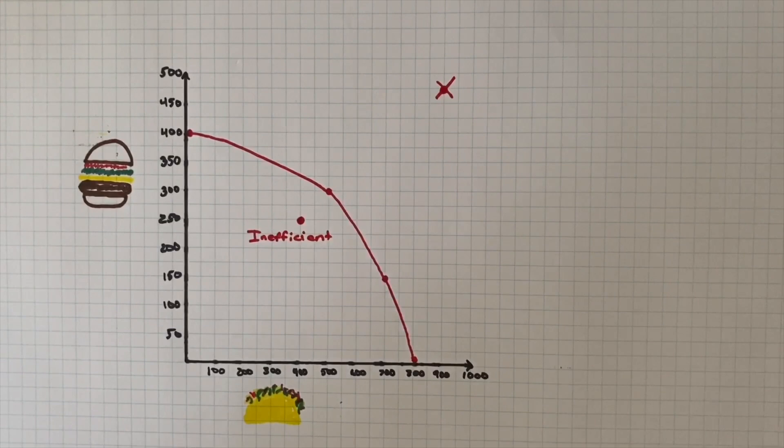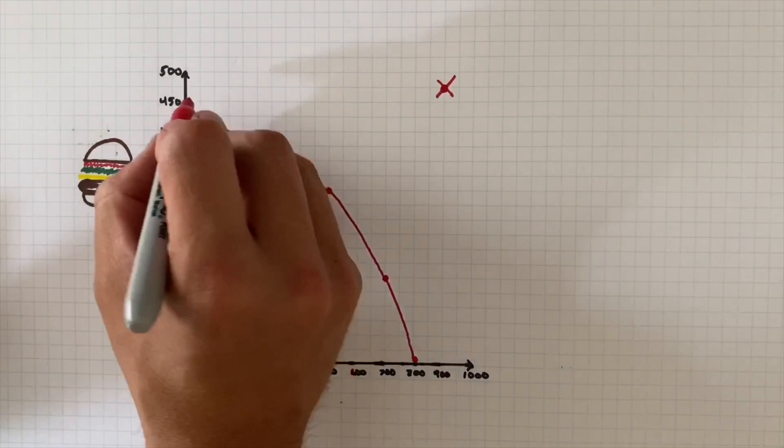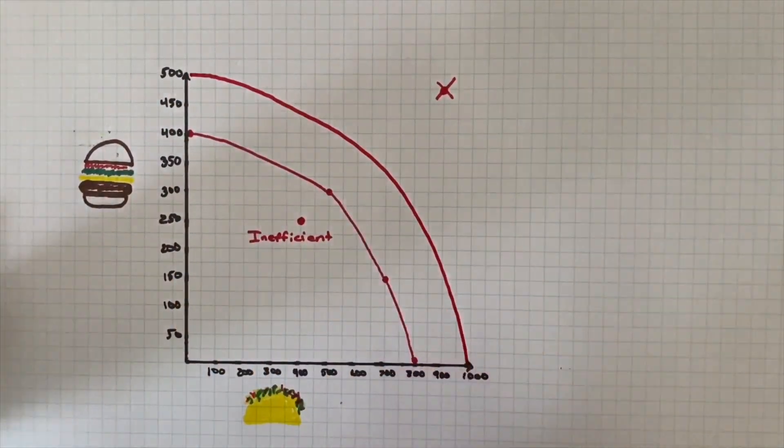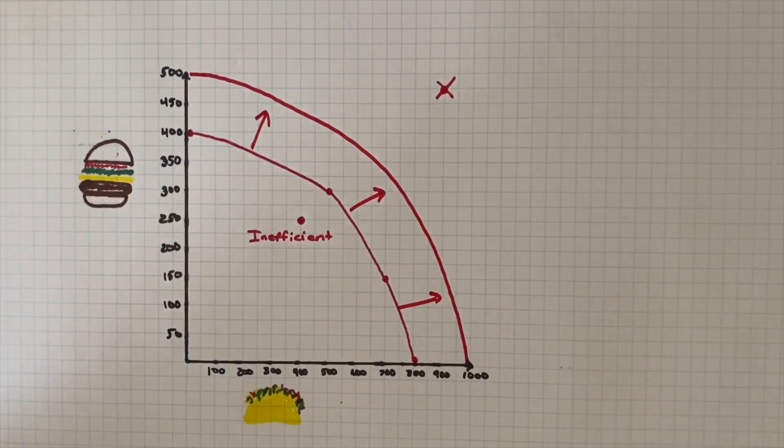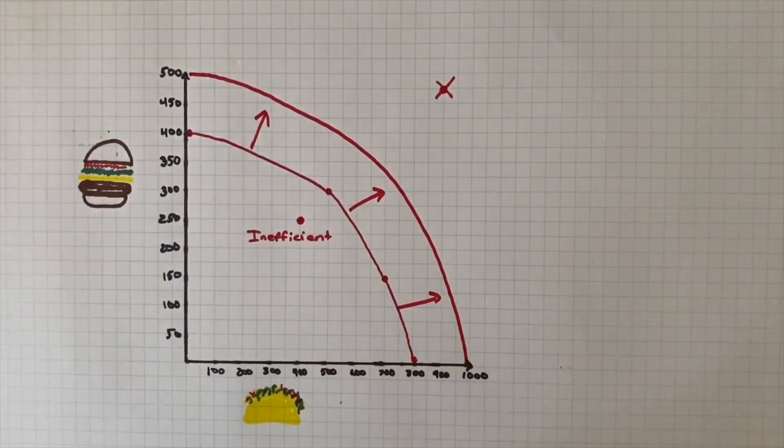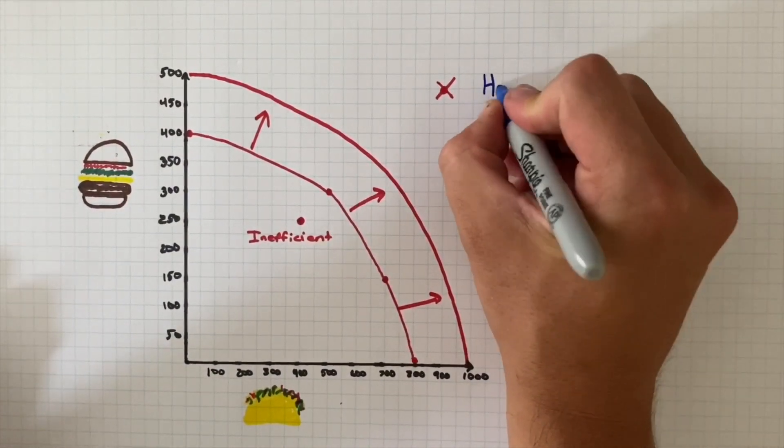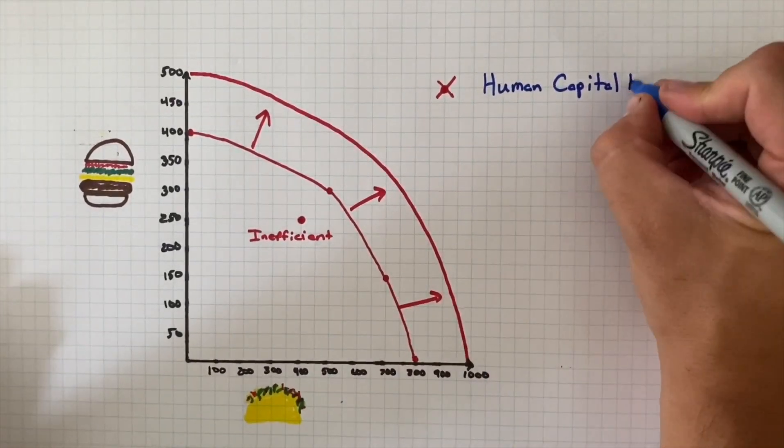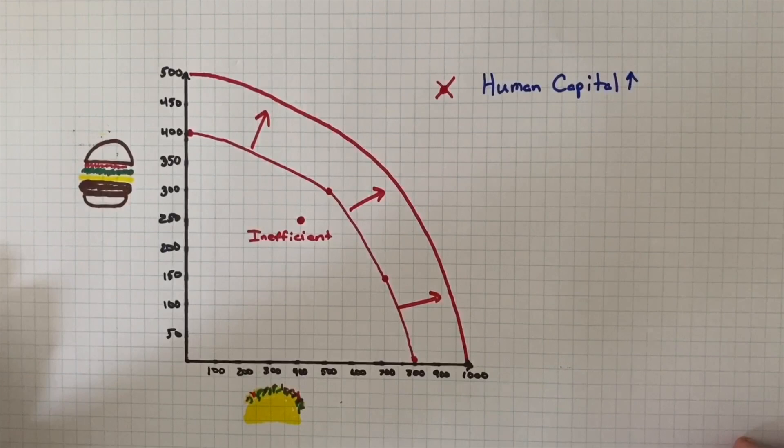However, it is possible for us to expand our production possibilities and shift our line outwards through what's known as economic growth. This can happen for a number of reasons. One could be improvements in human capital. We've already mentioned capital goods as goods that are used to create other goods. Humans are an important resource as well in the production process. If we're better educated or more highly skilled and trained, it's likely that that would improve our productivity as workers as well.